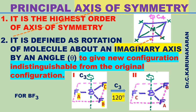For example, consider the BF3 (boron trifluoride) molecule. The axis of symmetry is defined as the rotation of a molecule about an imaginary axis by an angle theta — here 120 degrees — to give a new configuration. We are rotating the molecule by an angle theta through an imaginary axis. This is the imaginary axis for the BF3 molecule.